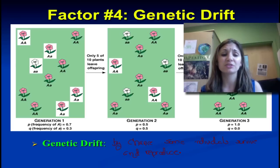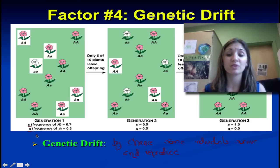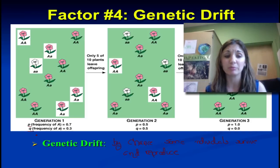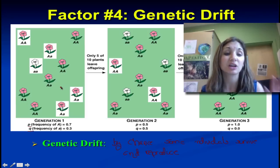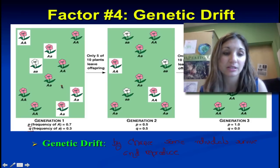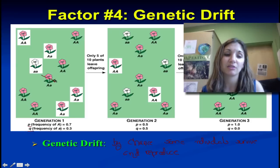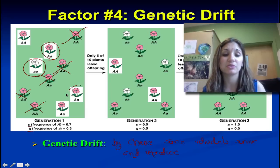If you imagine a field of flowers with different frequencies — recalling that we're going back to frequencies because they indicate whether we're in or moving out of Hardy-Weinberg equilibrium — and several of them were stomped on and destroyed by pure chance, not because of the color they were or any particular factor, just pure chance. The ones that survive now have the capability of reproducing, and they're reproducing again based on chance — not because they possess anything that makes them more fit or better suited for their environment.